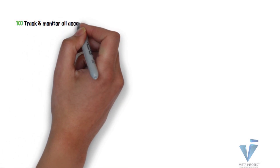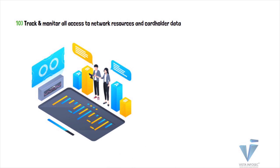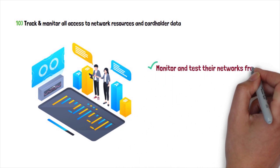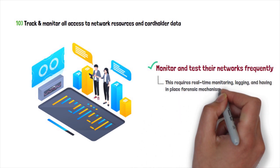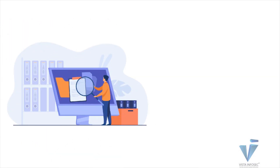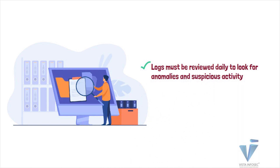Requirement 10, which is to track and monitor all access to network resources and cardholder data, aims to prevent various exploits by requiring organizations to monitor and test their network on a regular basis. This requires real-time monitoring, logging, and having forensic mechanisms in place. Logs must be reviewed at least daily to look for anomalies and suspicious activities, and collecting and monitoring logs from all in-scope devices must be documented on a regular basis. All these logs need to be stored and analyzed for security events, then alerted and followed up with an incident management process.